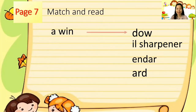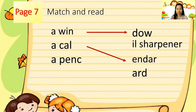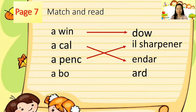Next is 'a wind' — yes, that's D-O-W. Now we have a window. 'A call' — what could be the missing letters that would complete our word 'calendar'? Right, it's E-N-D-A-R. Now we have a calendar. Next is 'a pence' — what could be the letters that we can put to make 'a pencil sharpener' complete? Yes, you're right: the I-L and the word 'sharpener.' Next — what are the letters that would complete our word 'a board'? Absolutely right: A-R-D. Now we have the word 'board.'